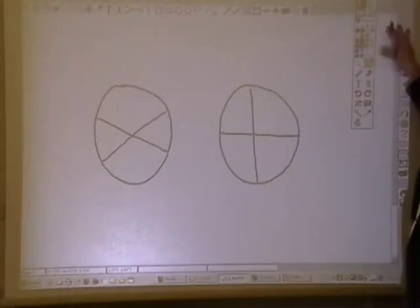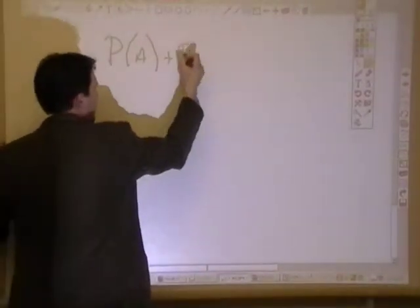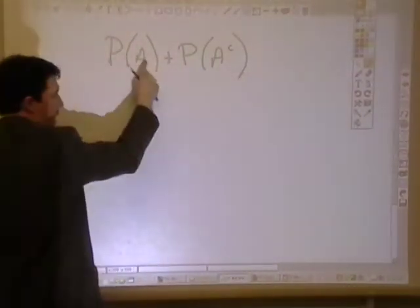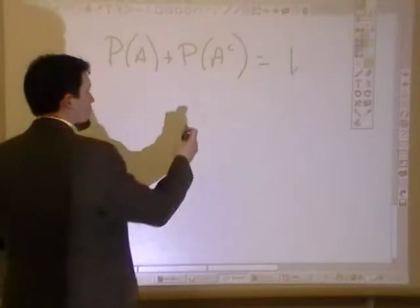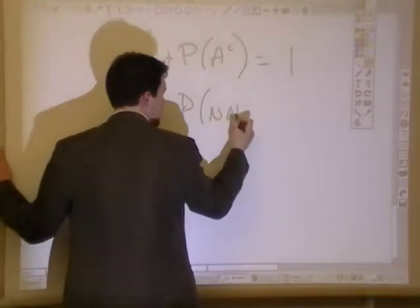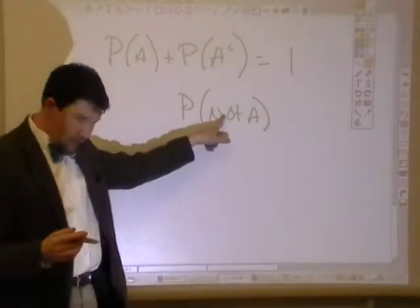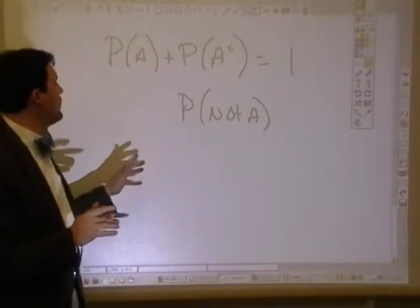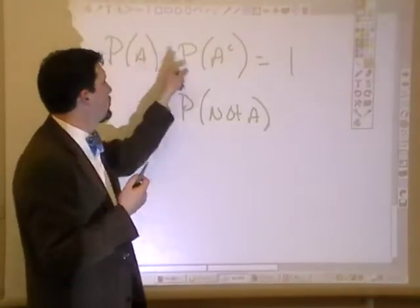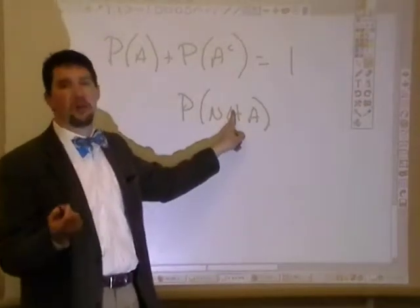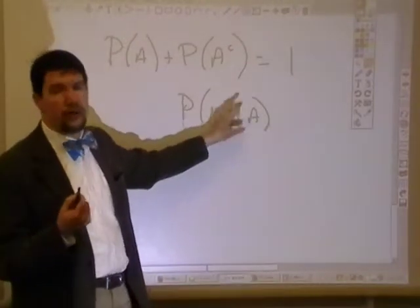So not A could be called the complement and we've got event A. Now, there are a couple different ways that we can write this. The probability of A plus the probability of the complement of A, A and not A, has to be equal to 1. But I can write the complement of A a couple different ways. I could write it as the probability of not A, which is how we really talk about not A. I've got A, I've got not A. So thinking about this, the probability of me pulling out a 4 from a deck of cards is 4 out of 52. The probability of me not pulling a 4 would be 48 out of 52.